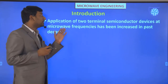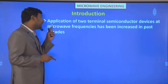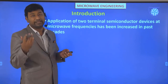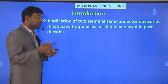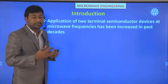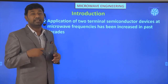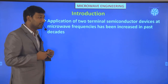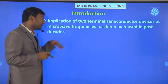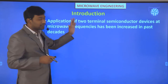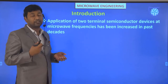The application of two-terminal semiconductor devices at microwave frequencies has increased in past decades. This is because we are moving from lower frequencies to higher microwave frequency ranges. The necessity of microwave devices increases day by day — the 5G frequency band is 28 GHz, whereas earlier 4G and 3G operated at 2.4 and 5.2 GHz. So from 1G, 2G, to 3G and 5G, the use of microwave devices continues to increase.